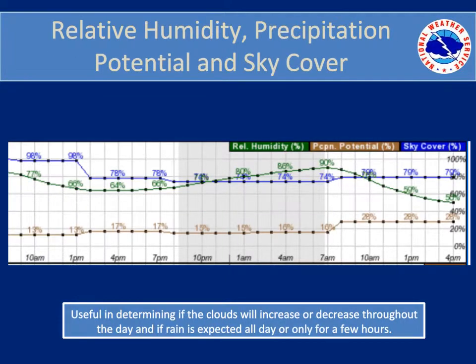The third part of the hourly weather graph shows relative humidity, precipitation potential, and sky cover. Do you ever wonder when you see a 70% chance of rain if it's going to rain all day or just for a few hours? The hourly weather graph can help answer that. In addition, you can use the sky coverage part of the graph when it's cloudy to see if the clouds will decrease for the afternoon or if it will stay cloudy all day.